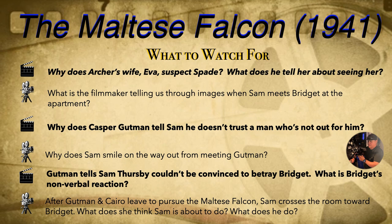Other things to watch out for: Why does Archer's wife Eva suspect Spade, and why does he tell her about seeing her? What is the filmmaker telling us through images when Sam meets Bridget at the apartment? Look for this — it's some good visual storytelling. Why does Casper Gutman tell Sam he doesn't trust a man who's not out for himself? Why does Sam smile on the way out from meeting Gutman? Gutman tells Sam that Thursby couldn't be convinced to betray Bridget — what is Bridget's nonverbal reaction to this? After Gutman and Cairo leave to pursue the Maltese Falcon, Sam crosses the room toward Bridget. What does she think Sam is about to do, and what does he actually do?